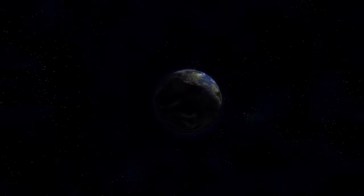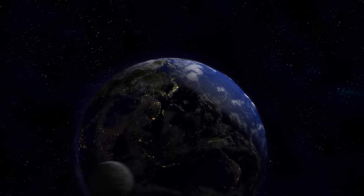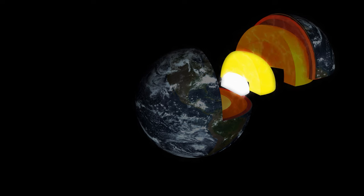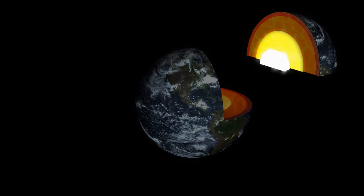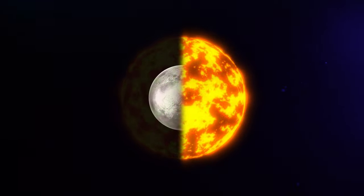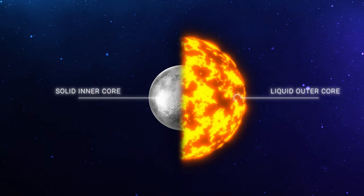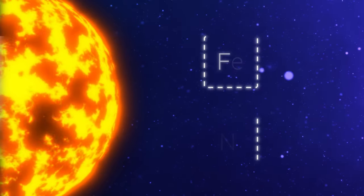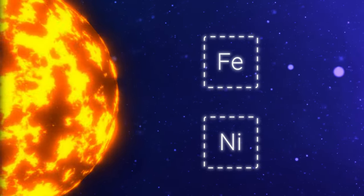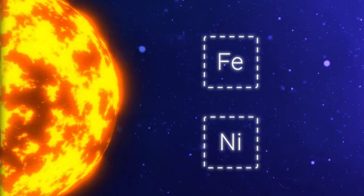To understand the mechanics of geomagnetic inversions, we must travel deep into the heart of the planet, to a place where intense heat and pressure produce one of the most mysterious phenomena on Earth. A core located at the center of the Earth is divided into two parts, a solid inner core and a liquid outer core. The outer core, consisting mainly of iron and nickel, is in constant motion due to Earth's rotation and thermal convection.